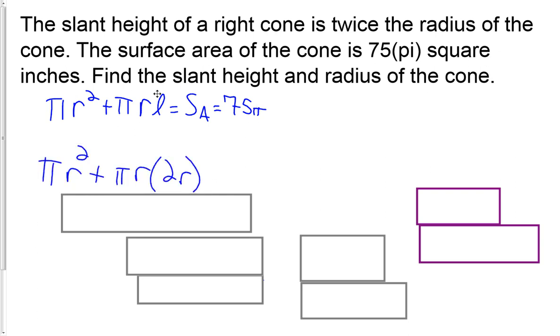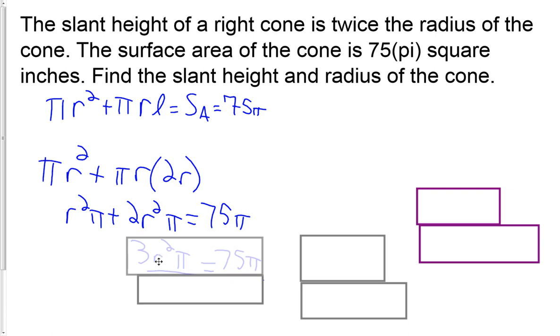We've got L is 2r, so I just plugged it in right away. Now we have pi r squared plus 2 pi r squared. So 1 of these r squared pi, 2 more of these r squared pi, give us 1, 2, 3 r squared pi. We're going to divide by 3 pi.